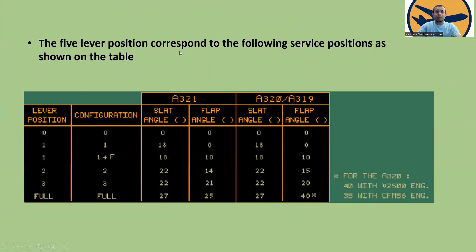There are five lever positions corresponding to the following surface positions. Lever position 0: configuration 0, slat angle 0°, flap angle 0° for A321/A320/A319. Lever position 1: configuration 1, A321 slat angle 18°, flap angle 0°; A320/A319 same — 18° and 0°.